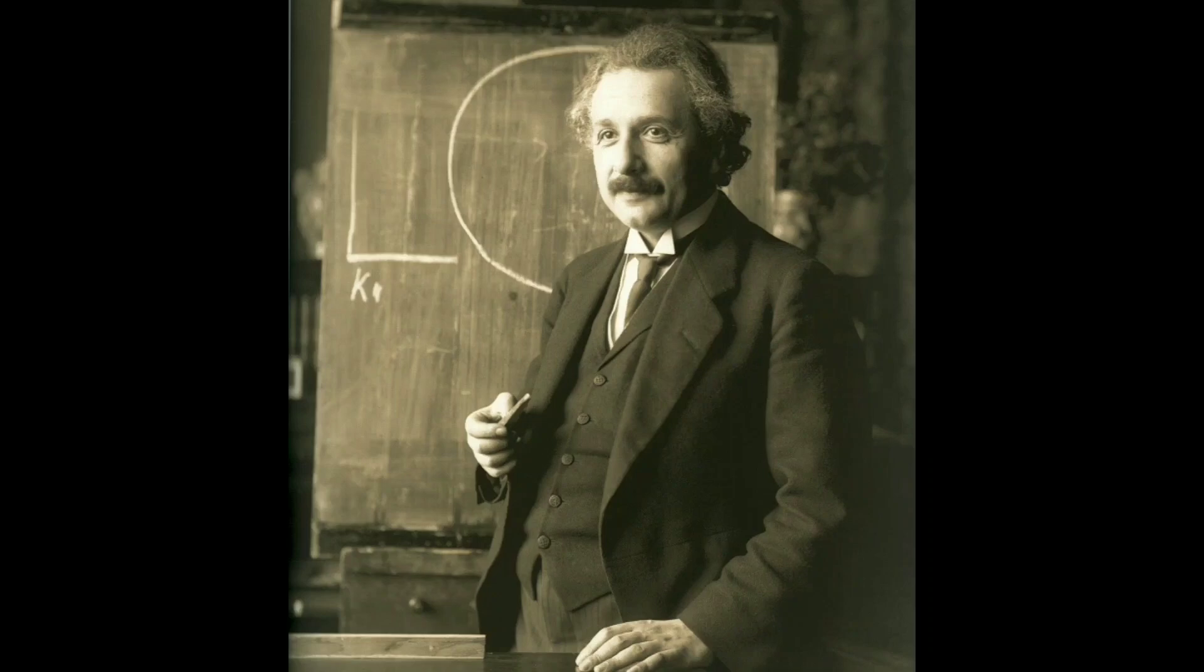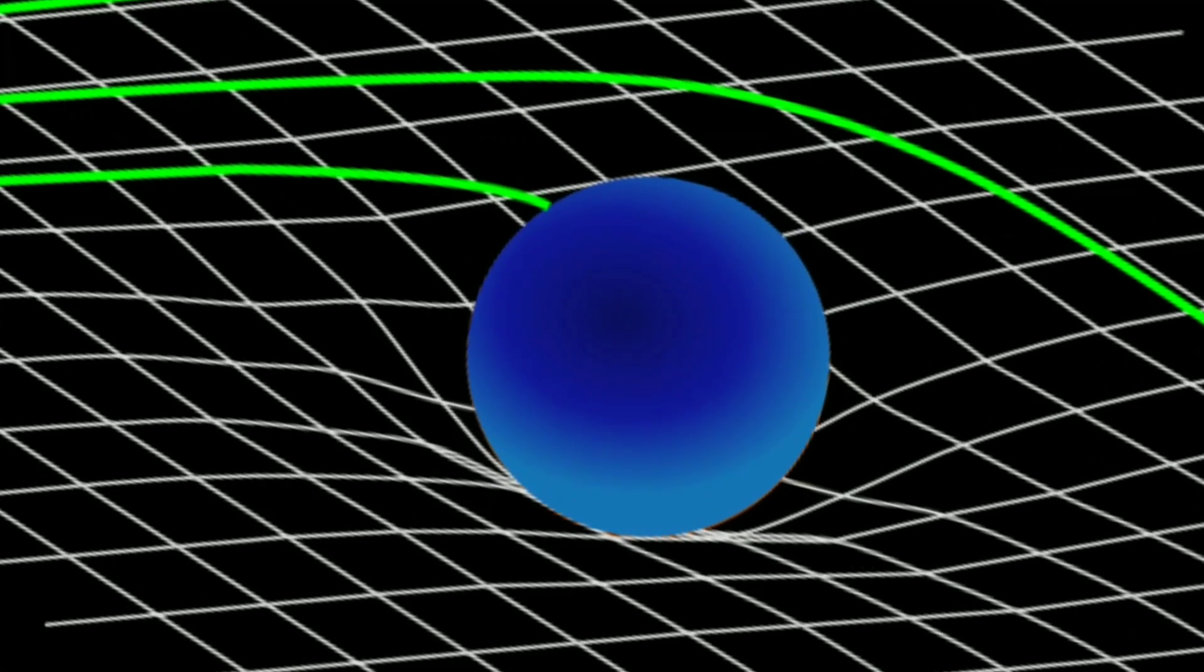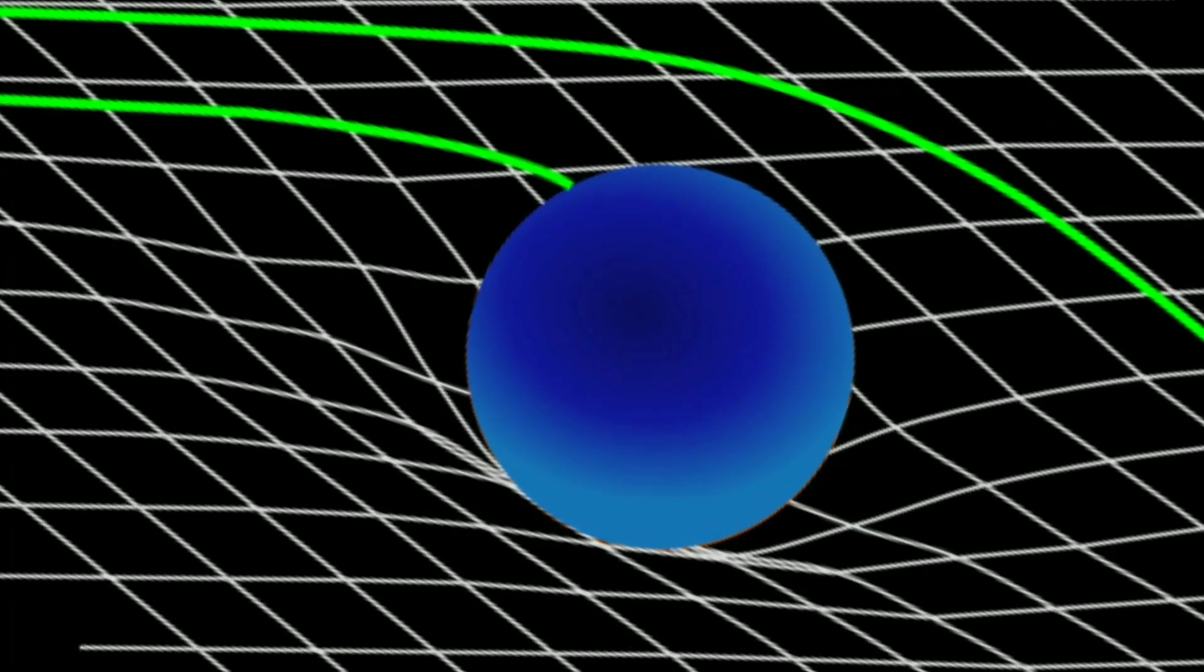But Einstein proposed that there is no force such as gravity. Gravity is what we experience when we are trapped in a curved space-time. This is the foundation upon which relativity is based.